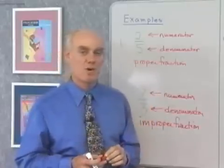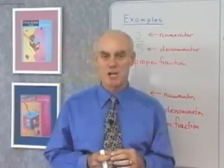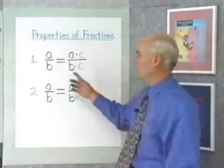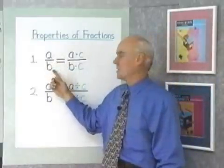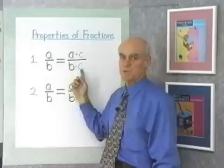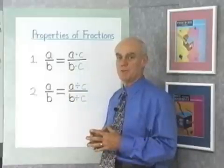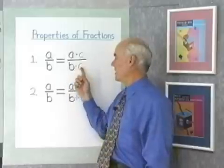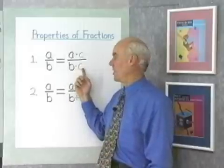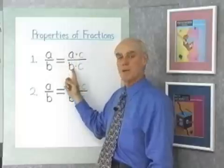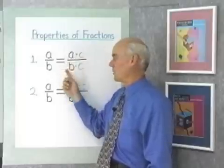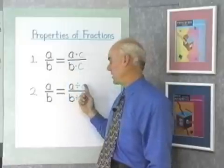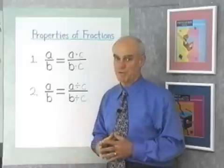As far as fractions go, we have 2 properties of fractions that we're going to use throughout this chapter. Our first property says that the fraction A over B is equivalent to the fraction A times C over B times C. That is, we can multiply the numerator and denominator of a fraction by any non-zero number and it won't change the value of the fraction. Here C represents any non-zero number. The same thing holds for division — we can divide the numerator and denominator by the same non-zero number and always produce an equivalent fraction.